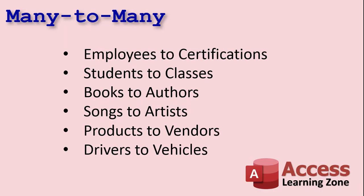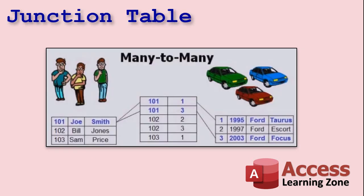Many-to-many relationships are useful whenever you've got a bunch of stuff on the left and a bunch of stuff on the right and you need to relate them together. Employees to certifications, for example — many employees to many certifications. Each employee can have multiple certifications and each certification can be taken by multiple employees. Students to classes, for example: each student can be enrolled in multiple classes, and each class can have multiple students. I'll show you how to set up a junction table to create that many-to-many relationship.